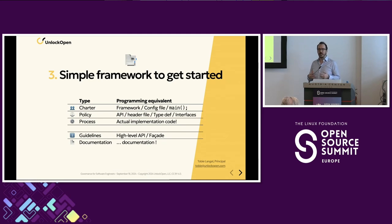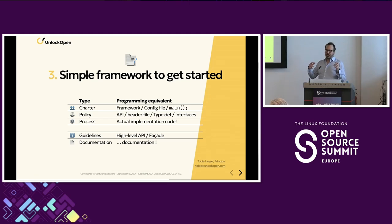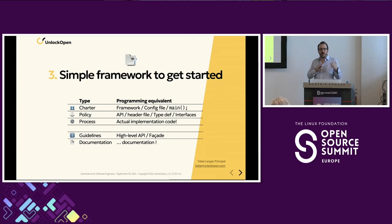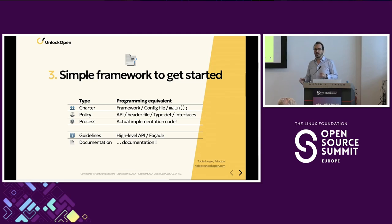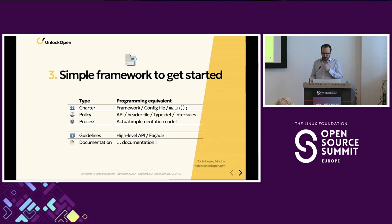Looking at this as a coding equivalent: the charter is the hardest to think about in terms of code, but it's kind of the orchestration layer — it could be a main function, a config file, or a framework that structures how the whole governance is organized. Think of policy as type definitions, interfaces, APIs, header files in C — this is where you give high-level direction, but no implementation. And then process is where the code actually happens.